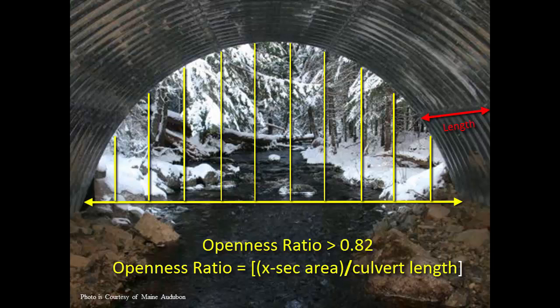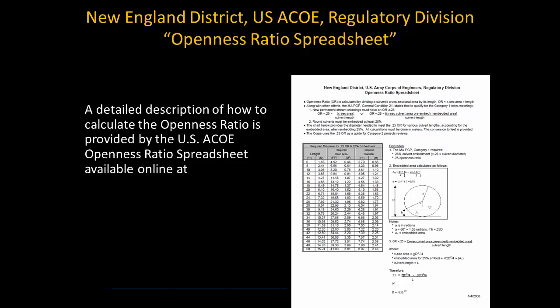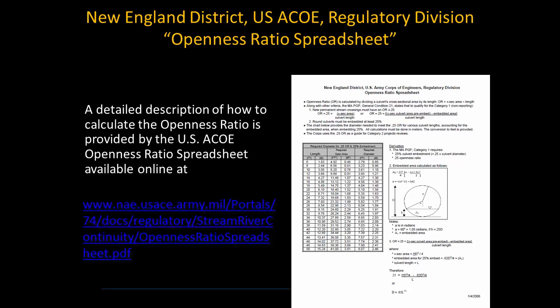For crossing structures with multiple cells or barrels, openness is calculated separately for each cell or barrel. The embedded portion of the culvert is not included in the calculation of the cross-sectional area. A detailed description of how to calculate the openness ratio is provided by the United States Army Corps of Engineers Openness Ratio Spreadsheet.